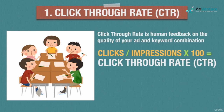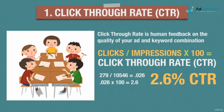For example, a keyword with 279 clicks and 10,546 impressions has a CTR of 2.6%. You take 0.026, multiply by 100, and you get 2.6 — that's your CTR. In other words, 2.6% of the people who see an ad triggered by that keyword actually clicked on it. It goes without saying that the higher the CTR, the higher your quality score will be.